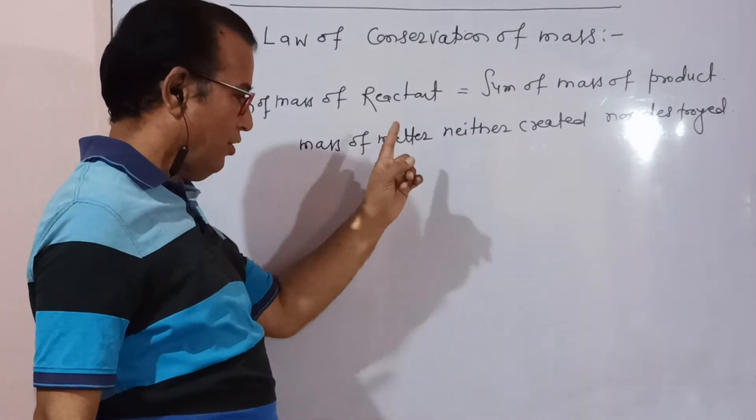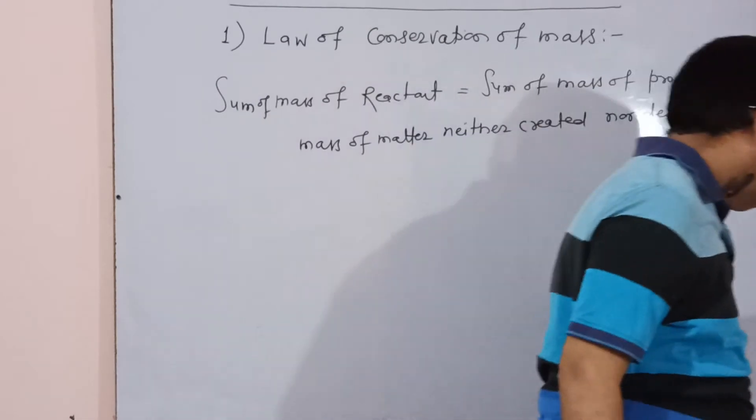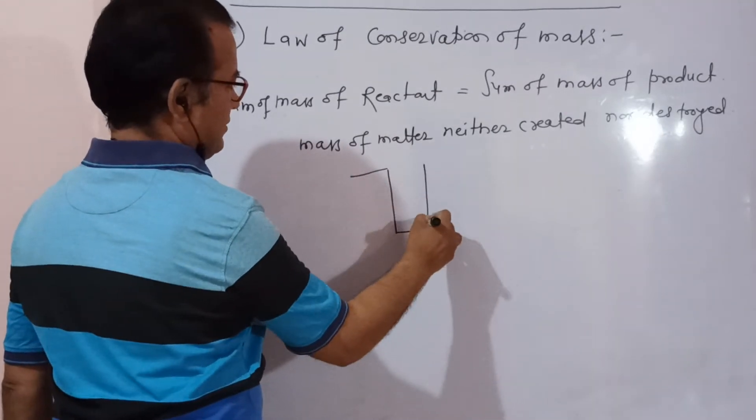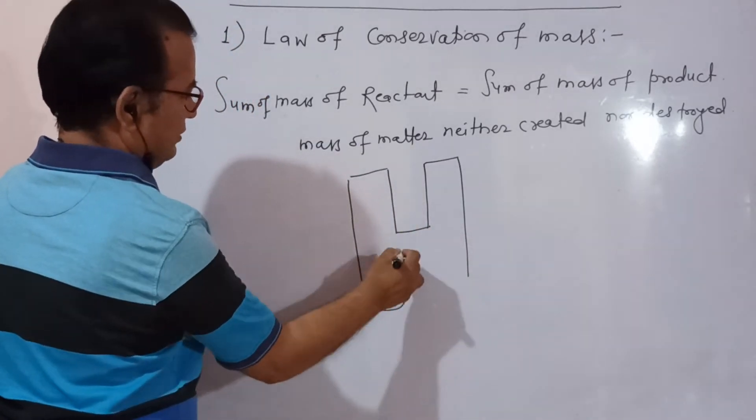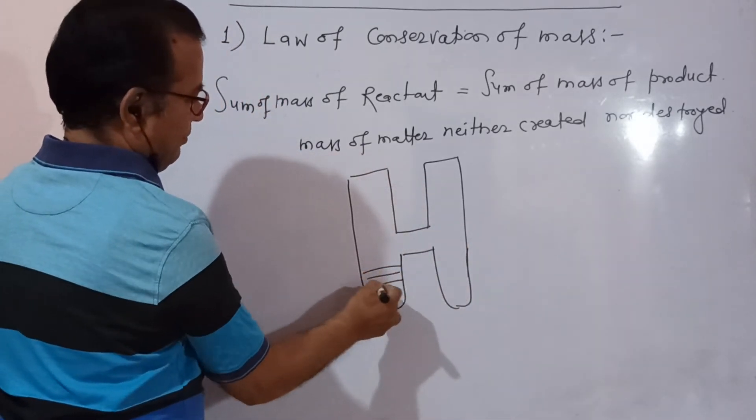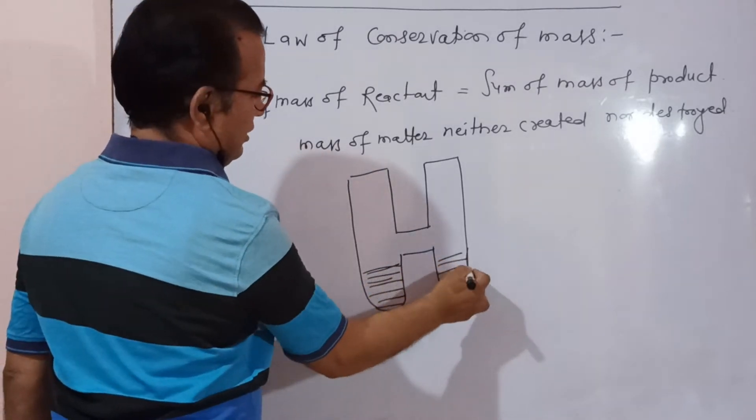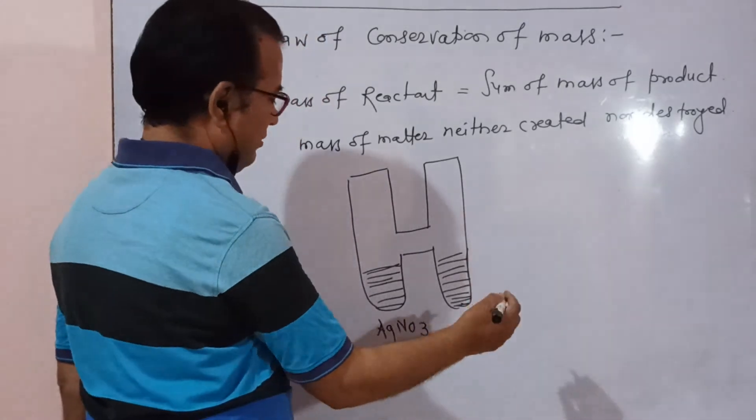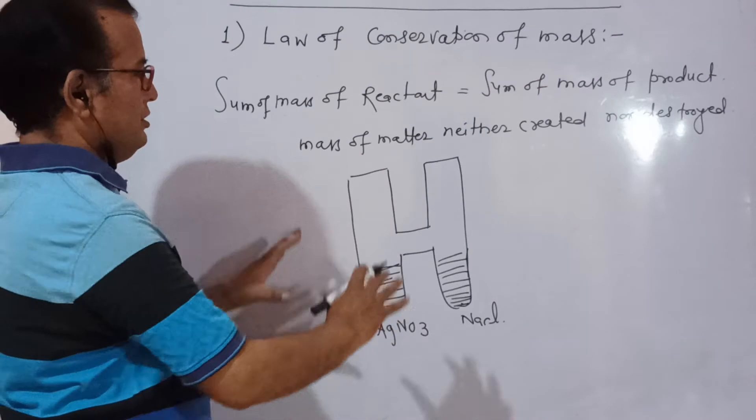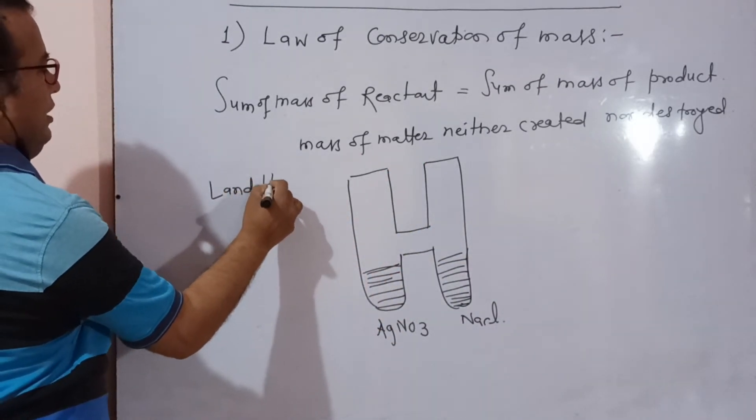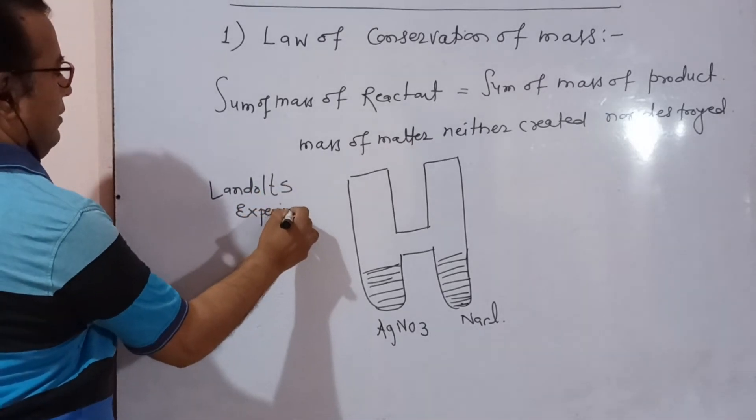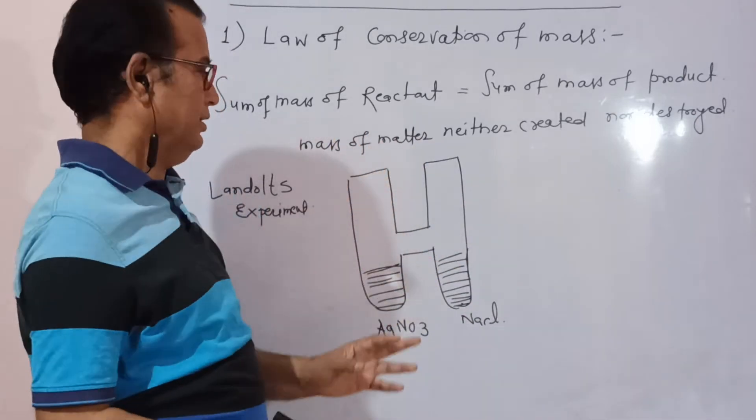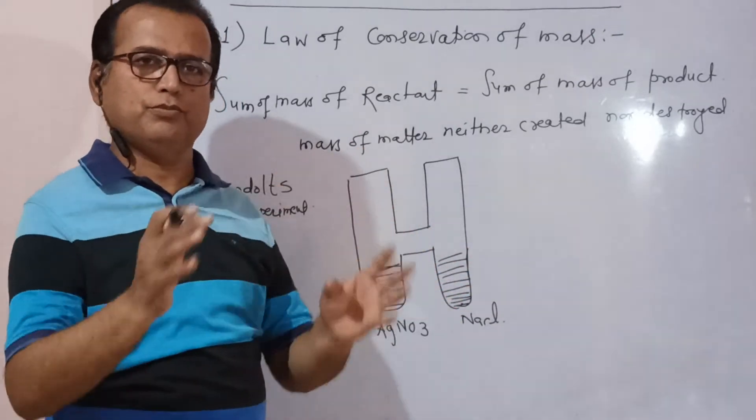We are taking one reaction - Landold's experiment. You have this side and this side, reactant on different sides. This is known as Landold's experiment. Weigh this H-shaped tube before reaction, and disturb this, mix this AgNO3 and NaCl. When mixing takes place...